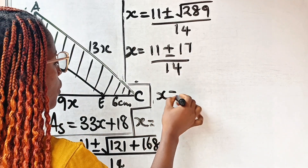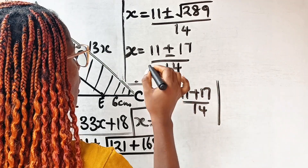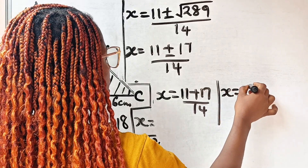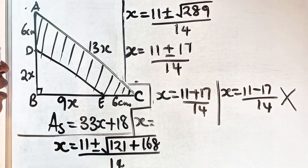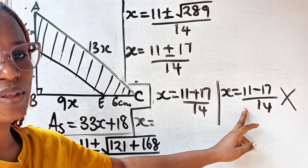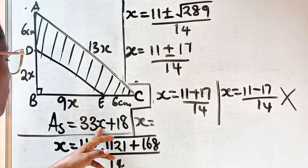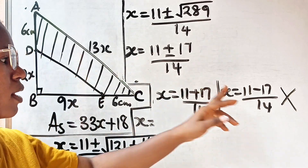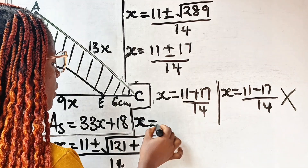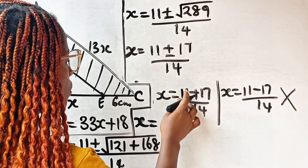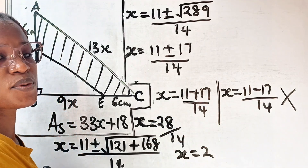So we have x equal to 11 plus 17 divided by 14, or x equal to 11 minus 17 divided by 14. We discard the second solution because it gives a negative number, and x here is a length, so it cannot be negative. Therefore x equals 28 divided by 14, which gives us x equals 2.